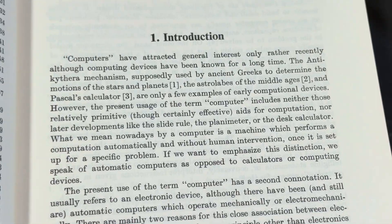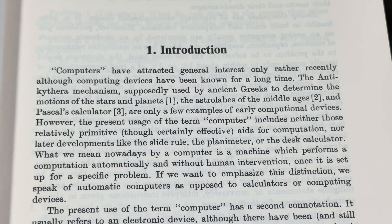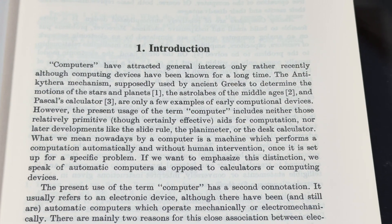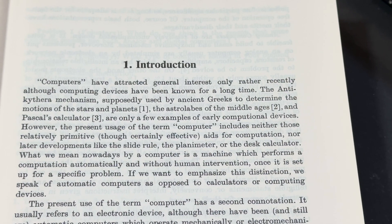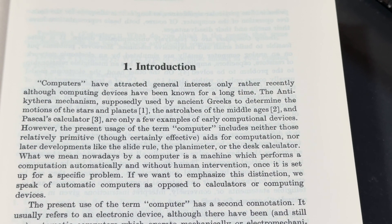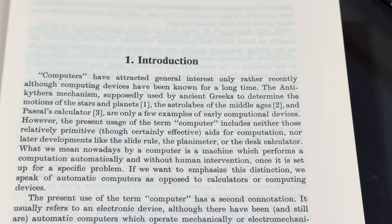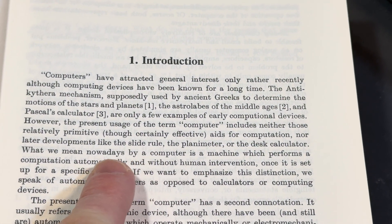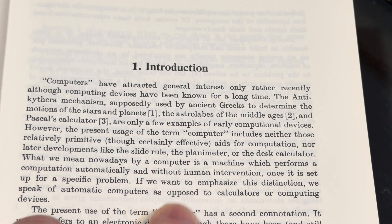Here's the introduction. "Computers" — and they put it in quotes — "have attracted general interest only rather recently, although computing devices have been known for a long time." The Antikythera mechanism, supposedly used by ancient Greeks to determine the motions of the stars and planets, the astrolabes of the Middle Ages, and Pascal's calculator are only a few examples of early computational devices. However, the present usage of the term computer includes neither those relatively primitive, though certainly effective, aids for computation, nor later developments like the slide rule, the planimeter, or the desk calculator.